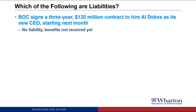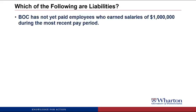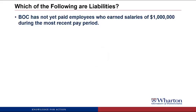The liability only appears once there's an obligation based on benefits received from him working for us. He hasn't worked yet, so there can't be a liability. BOC has not yet paid employees who earn salaries of $1 million during the most recent pay period. This one would be a liability. There's an obligation based on benefits we've received — the employees have worked for us. The amount we owe them is reasonably certain, so we call this salaries payable for $1 million.